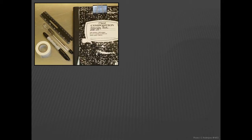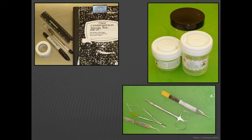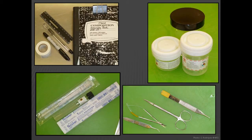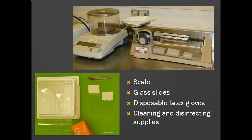A necropsy kit should contain a notebook or standard necropsy form for detailed notes, as well as writing implements and a ruler for taking measurements. Containers with formalin or other suitable tissue fixative are necessary. For most amphibians, a small iris scissors and forceps will suffice, while more delicate instruments such as those used for ocular surgery are well suited for smaller amphibians. Culture swabs and transport media, a variety of containers for collecting samples such as syringes and plastic bags, paper tags for tissue identification, and cryovials for frozen tissue sample archiving should all be at hand. Scales are important for recording the weight of the animal, and glass slides can be used to prepare cytologic specimens for diagnostic purposes.